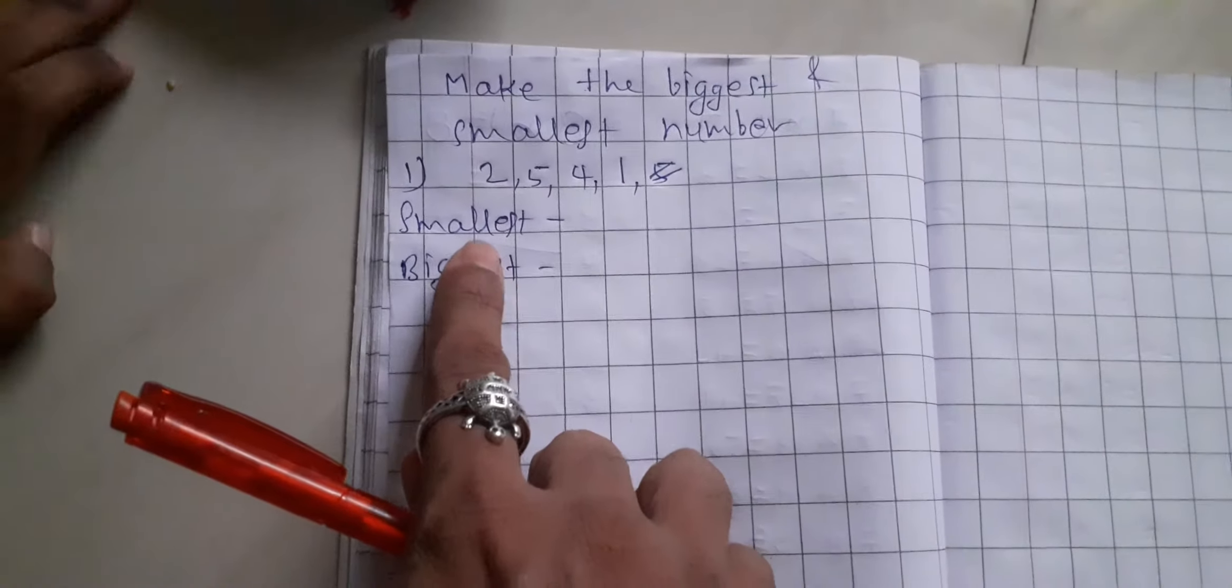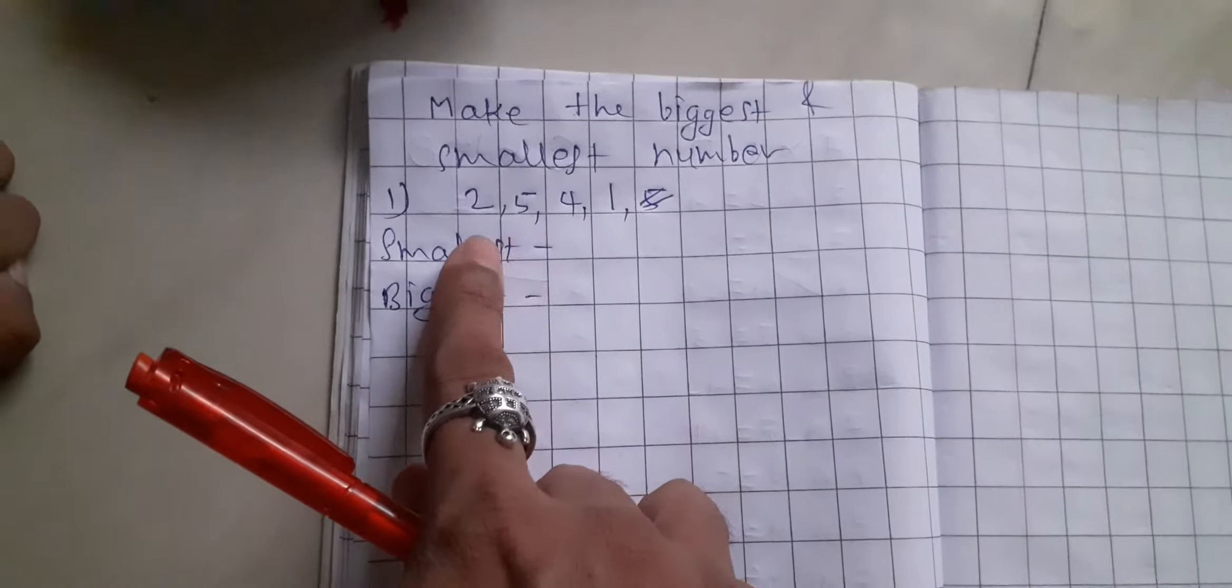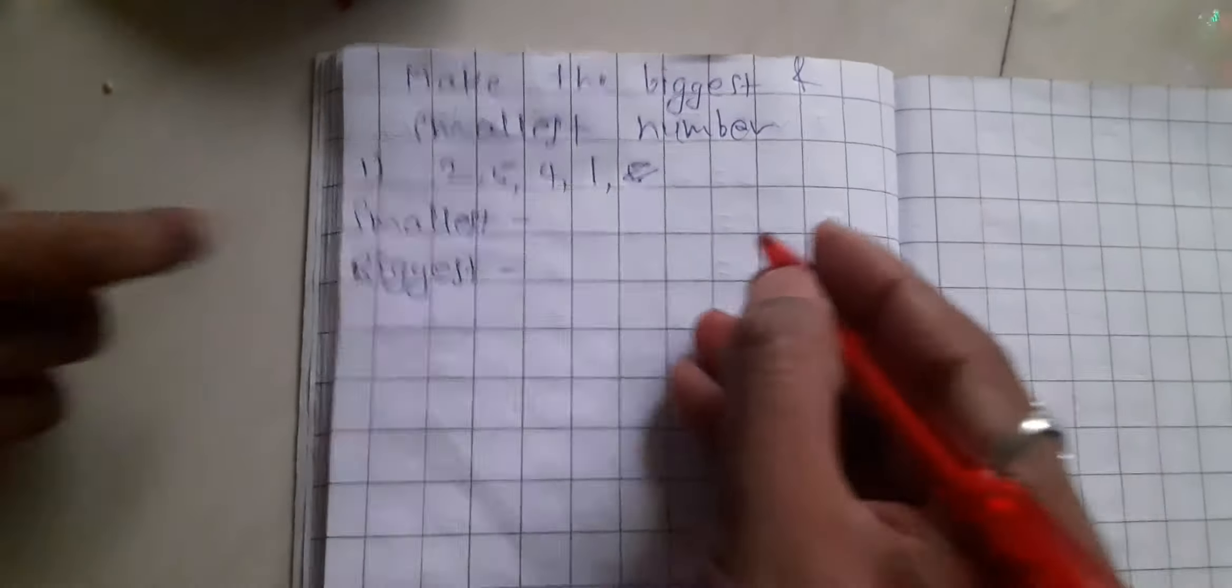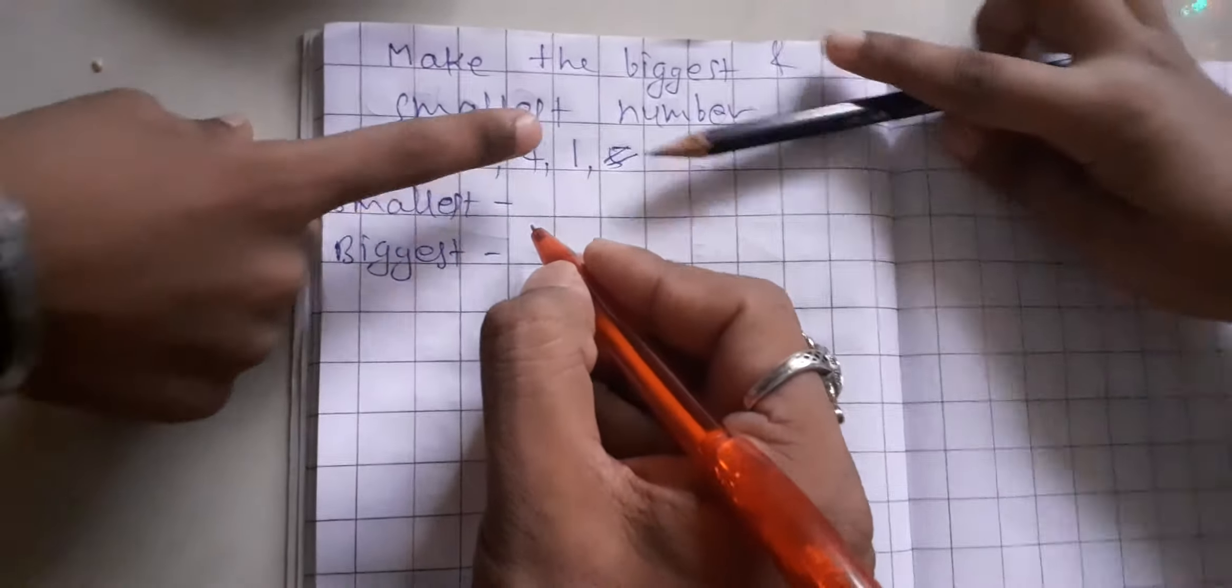Now I will make the biggest number. Which number is biggest? Biggest number means which number is the biggest number? Which number is the biggest number? 5.